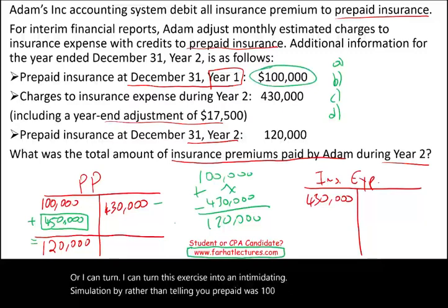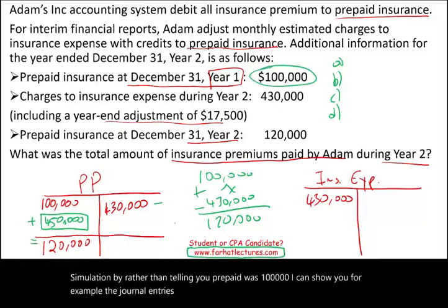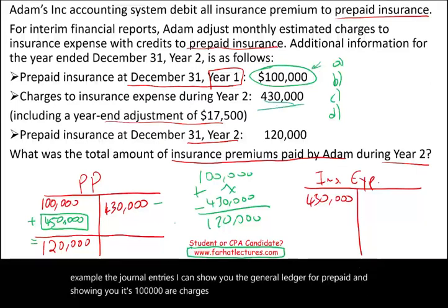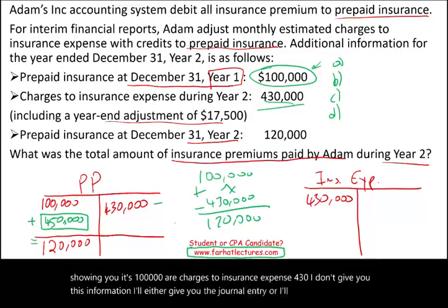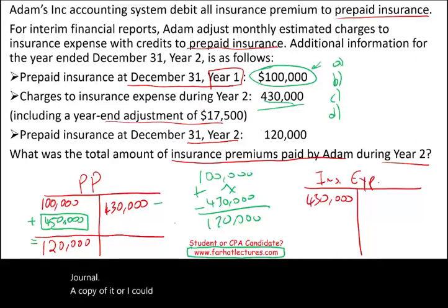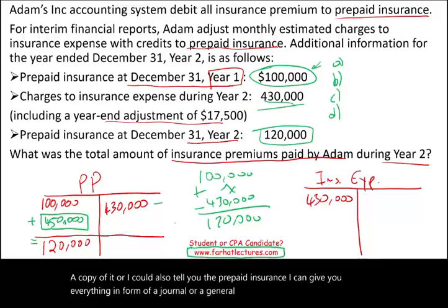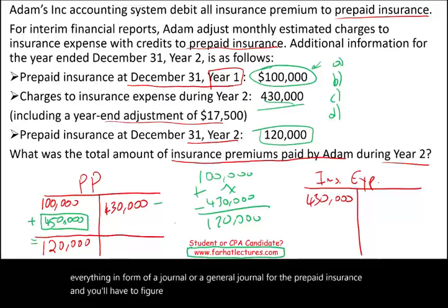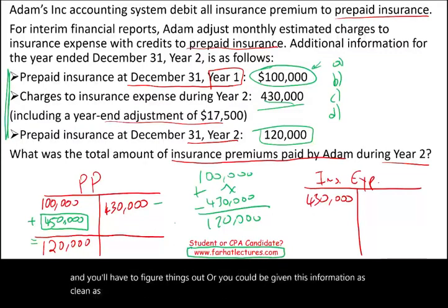I can turn this exercise into an intimidating simulation by, rather than telling you prepaid was $100,000, showing you the journal entries or the general ledger for prepaid showing it's $100,000. For the charges to insurance expense of $430,000, I could give you the journal entry or a copy of the general journal instead of stating it directly. Or the information could be given as cleanly as in this exercise. Regardless, once you understand how to approach a prepaid asset problem, they all work the same way.